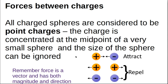Let's have a look at where everything is coming from here. All charged spheres are considered to be point charges, so they'll show you these big balls to show you a charge, but in actual fact they're considered to be a point charge. The charge is concentrated at the midpoint of a very small sphere and the size of the sphere can be ignored. This is important because we're going to be using the distance between spheres.